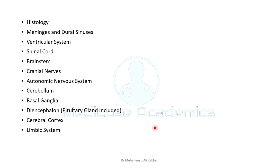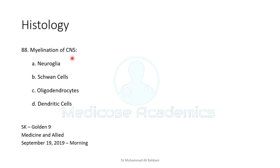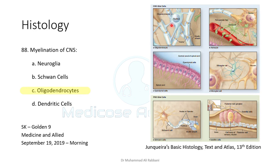First, questions regarding the histology of the CNS. Myelination of the CNS is done by oligodendrocytes. For reference, myelination of the peripheral nervous system is done by Schwann cells. The difference is that in the PNS one Schwann cell is dedicated wholly to one axon, whereas in the CNS one oligodendrocyte is myelinating a number of axons at the same time.